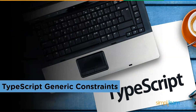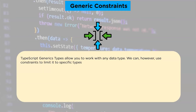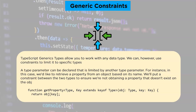TypeScript generic constraints. TypeScript generic types allow you to work with any data type; however, we can use constraints to limit it to specific types. A type parameter can be declared that is limited by another type parameter. For instance, we would like to retrieve a property from an object based on its name. We will put a constraint between two types to ensure that we are not obtaining a property that does not exist on the object.